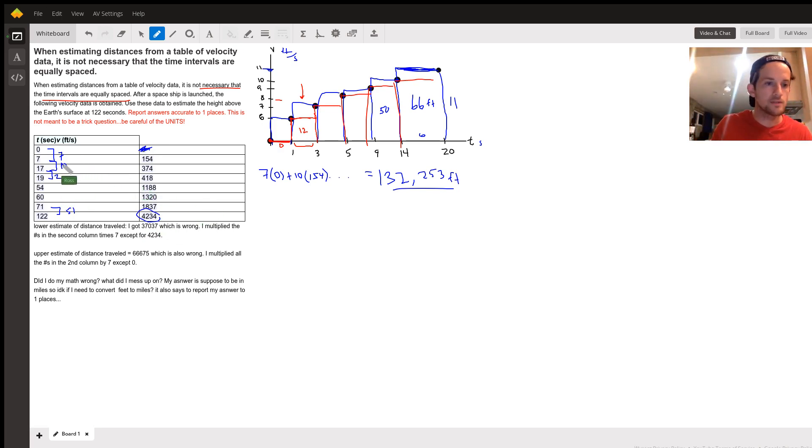So in this case, same intervals, we're still going to have 7, 10, 2, etc, etc. But now the 7 is going to get multiplied by 154, because that's now the first number in our list. The 10 by the 374, etc, etc. All the way down to this 51 now being multiplied by 4,234, which is going to be a pretty big number. I'm not going to write all those numbers out, but I will tell you that the answer I ended up with for this upper limit, or the upper estimate, is 291,295. 291,295? Yeah, 295 feet. And again, you could convert that to miles by dividing by 5,280 feet.